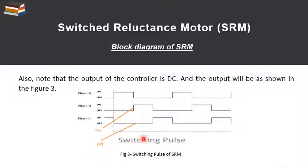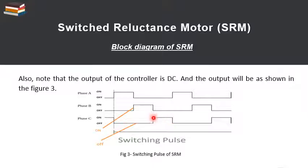The output shows the switching pulses of the switched reluctance motor for phase A, phase B, and phase C. We can see the on condition and the off position. When phase A is on, we energize it, then de-energize it; then phase B is energized, and so on. This is the switching pulse pattern of SRM.